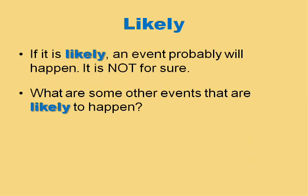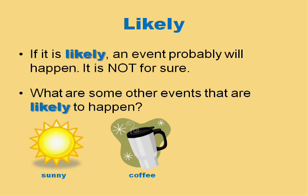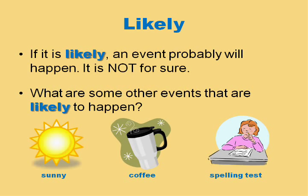Likely means that some event will probably happen, but it's not for sure. What are some events that are likely to happen? We will likely continue to have a sunny day today — you never know, we could get some clouds later, but for right now it's sunny. It's likely I'll drink coffee in the morning — usually it's coffee. And it's likely that we'll have a spelling test Friday, though we do have other things that come up sometimes.